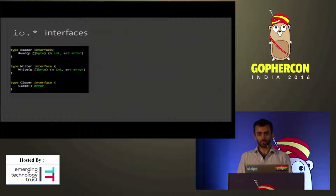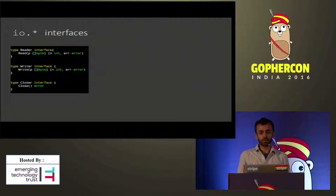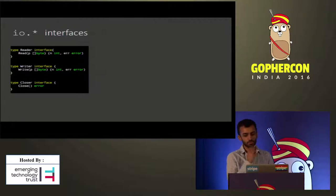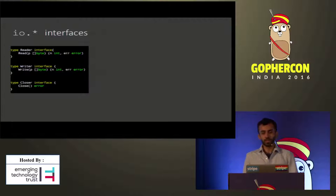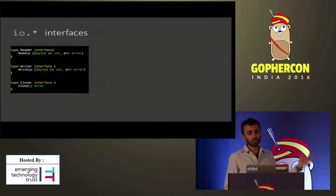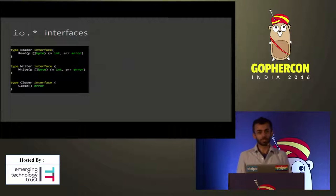The IO package from the standard library gives us a number of interfaces for interacting with data — like reading, writing, and closing data sources. They define a lot of them; these are only just three of them. In Go, the os.File type implements all three of these interfaces and more, though some types will implement just a subset.